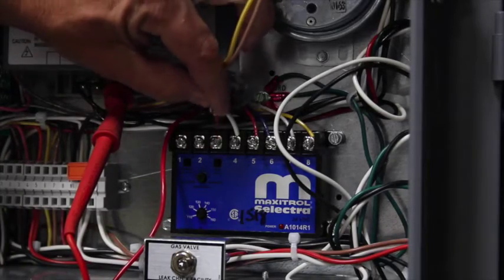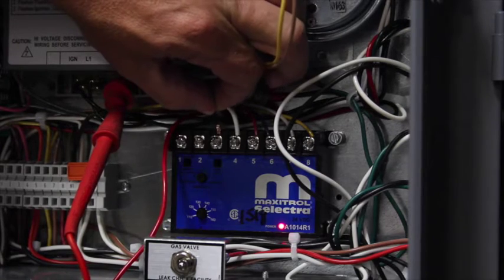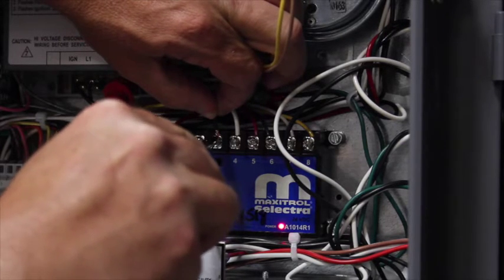Once the manifold differential pressure is set, reinstall wire number three on the amplifier. Insert the wire and tighten the screw.